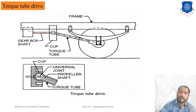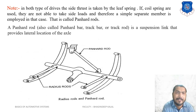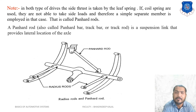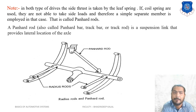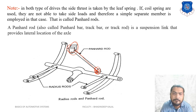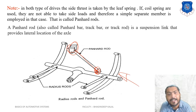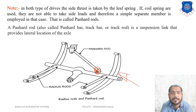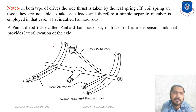The torque tube drive can bear more load, making it costly and suitable for heavy vehicles. An important note for both drive types: side thrust is always taken by the leaf spring. If coil springs are used instead, they cannot take side load, so a separate member called the pan hard bar is employed. One end of the pan hard bar is connected to the frame and the other end to the axle, allowing it to bear side thrust.